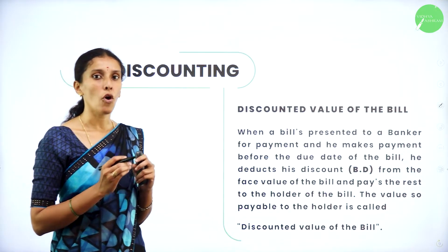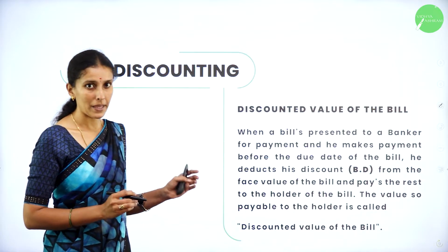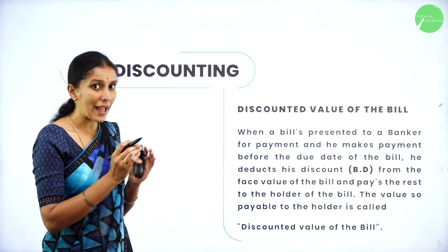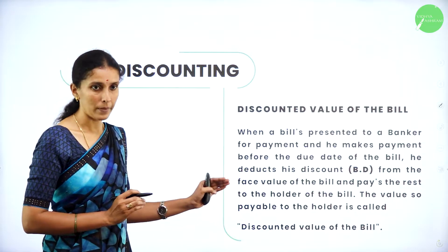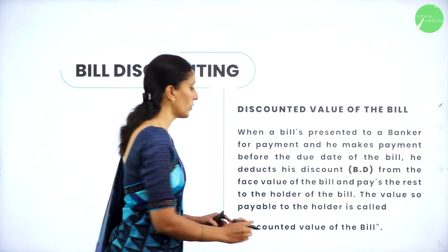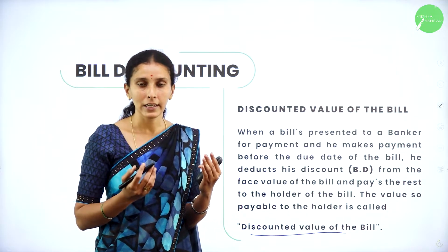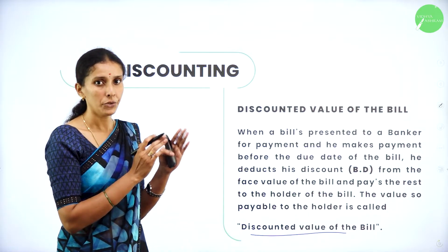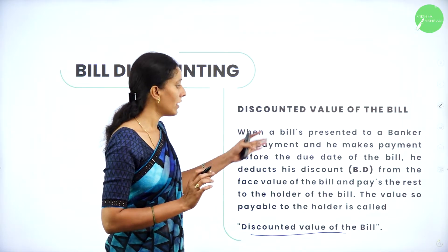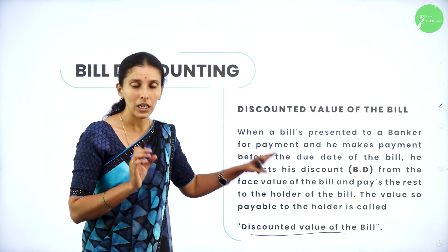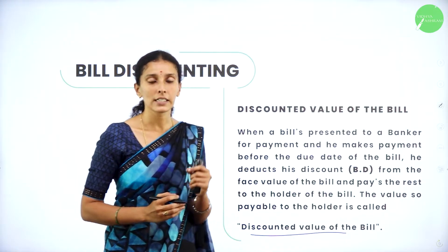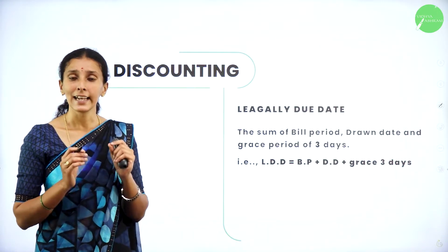Next, discounted value of the bill. When a bill is presented to a banker for payment and he makes payment before the due date, he deducts his discount — the banker's discount — from the face value of the bill and pays the rest to the holder. The value payable to the holder is called the discounted value of the bill. When you are ready to pay within the due date, you give the bill to the bank; the bank puts interest on the face value and gives you back a certain discounted amount.